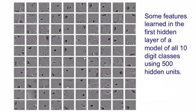So here's some feature detectors that were learned in the first hidden layer of a model that uses 500 hidden units to model all 10 digit classes. And this model has been trained for a long time with contrastive divergence. It has a big variety of feature detectors.